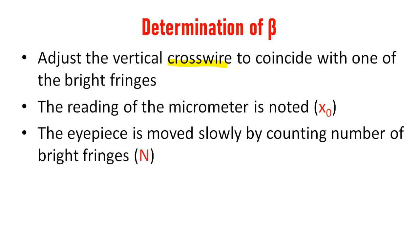Now let us move the eyepiece slowly. At the same time we need to count the number of bright fringes. Initially we need to count the number of bright fringes as N.